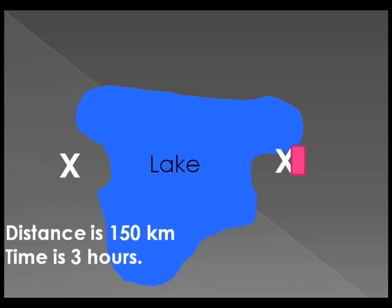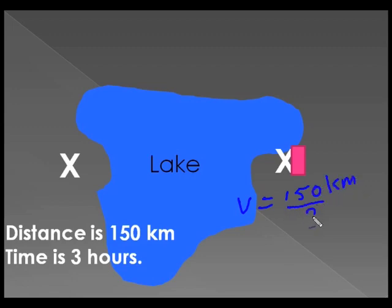You know that your speed can very simply be calculated: it's 150 kilometers divided by the three hours. Your average speed for that entire little trip was 50 kilometers per hour.